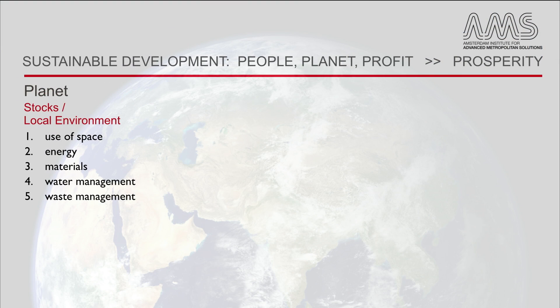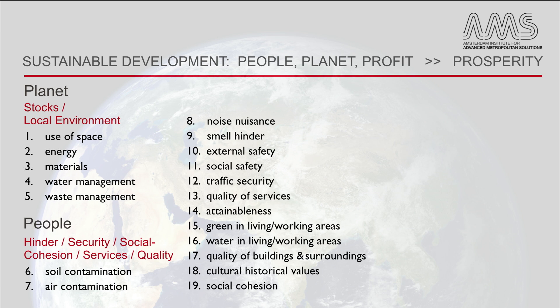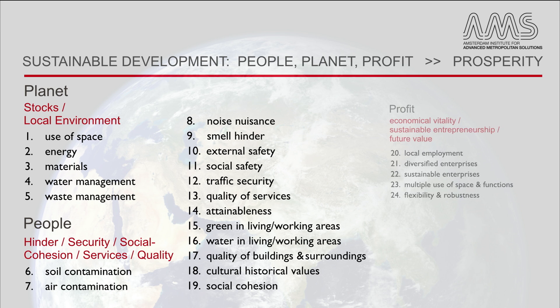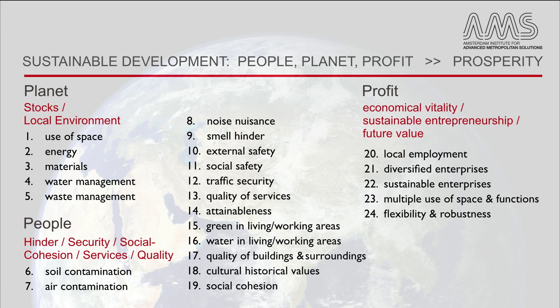The planet aspects relate to the technical aspects, or so-called stocks and flows in the local environment, like energy, space, water and waste. The people aspects are related to livability, like air or soil contamination, safety and quality-related aspects, such as available green and social inclusion. Finally, the profit-related aspects concern economic vitality and future values, such as local employment, flexibility and robustness.